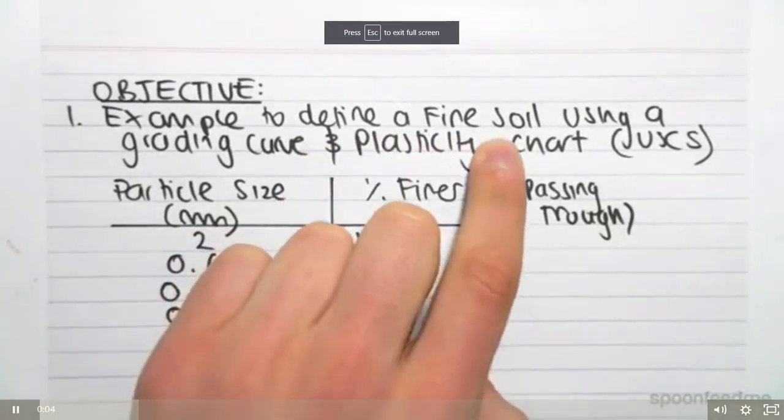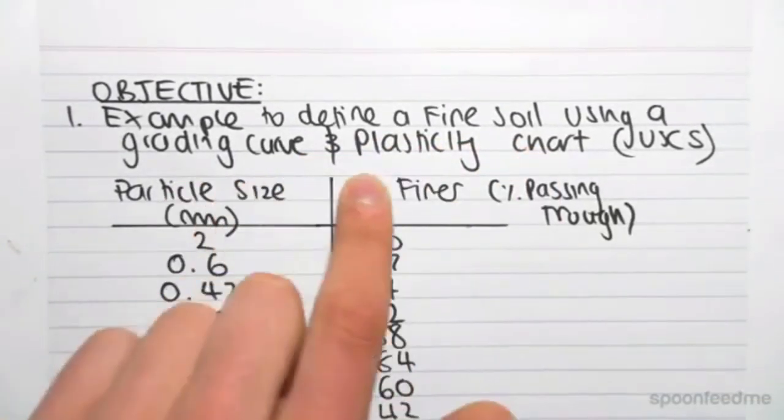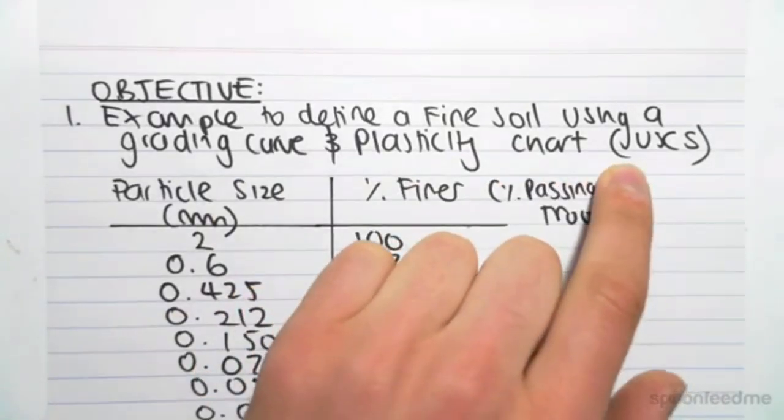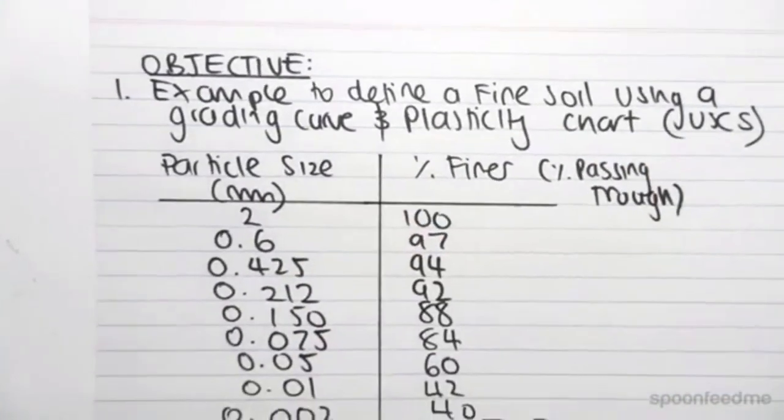An example to define a fine soil using a grading curve and plasticity chart under the unified soil classification system. So we're just going to jump straight in.